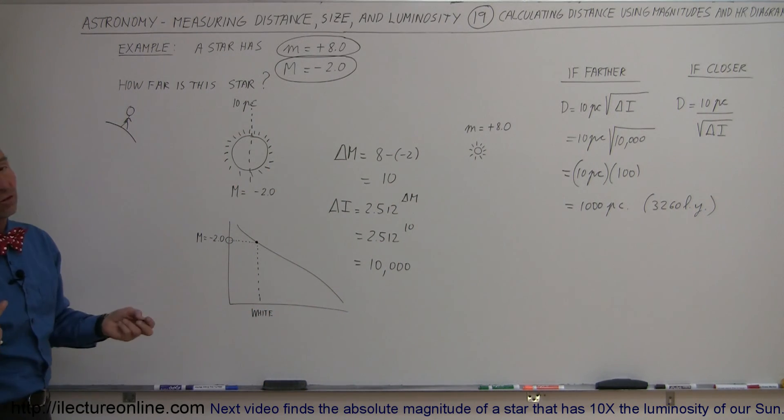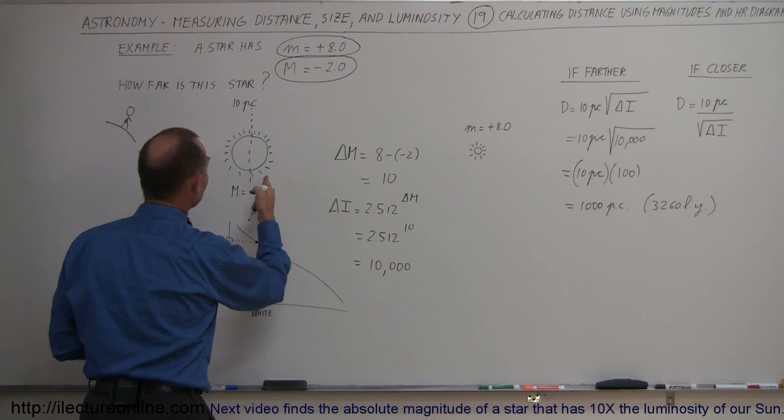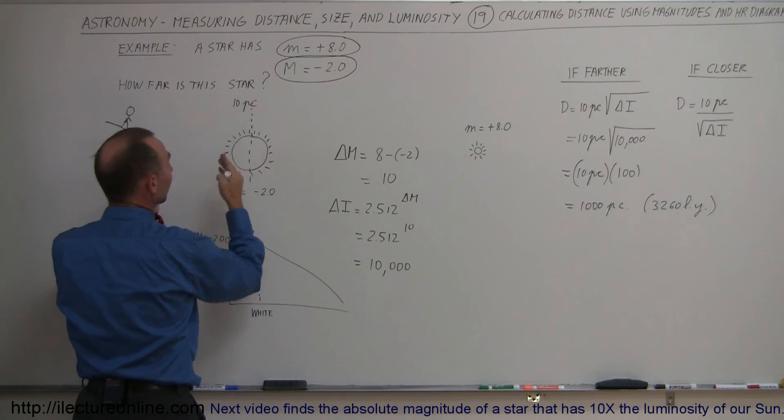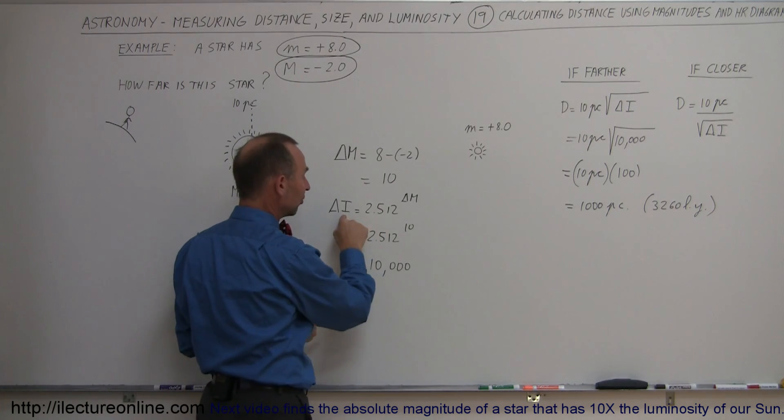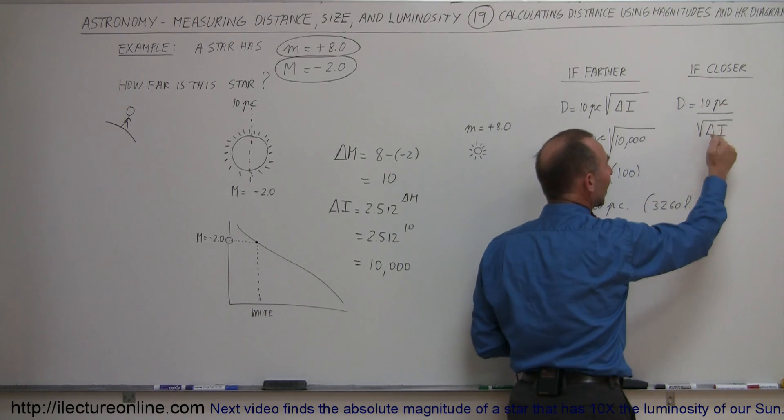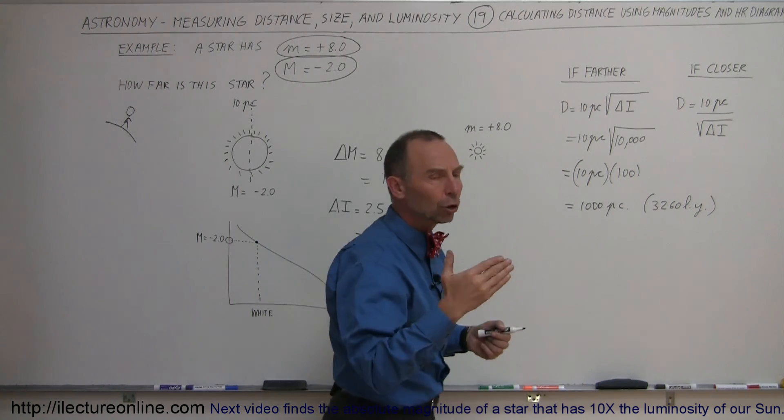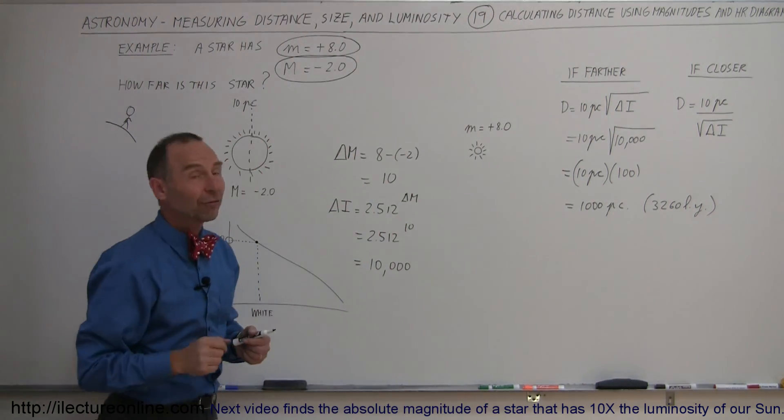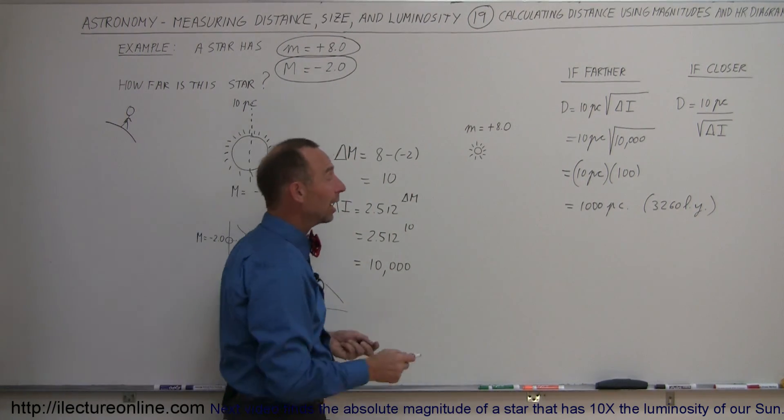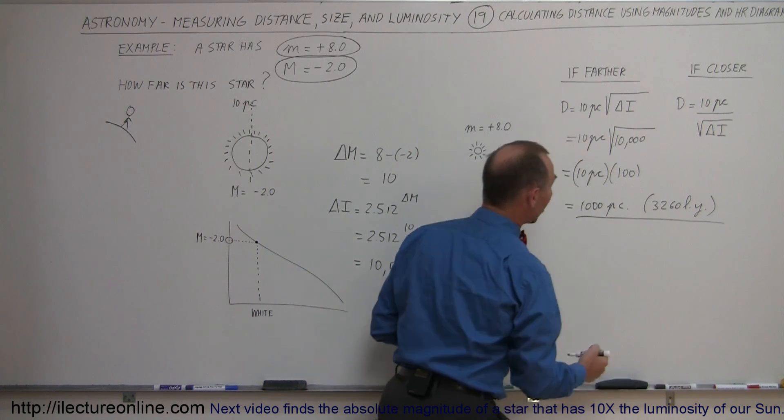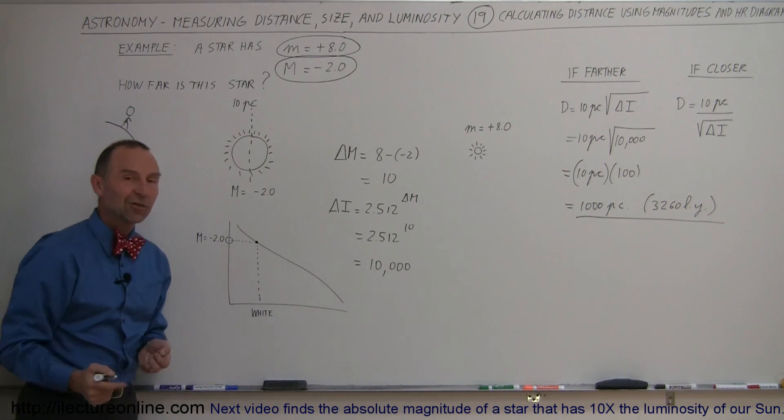Isn't that great? And it turns out, by the way, if the star happened to be closer, again, you measure the difference in magnitudes, then you measure the difference in intensities, and then you use this equation, you divide by the square root of the difference in intensities to get the distance, which then will be closer than 10 parsecs instead of farther away. But that's how we do that. That's how we determine the distance of stars, using the HR diagram. Thank you.